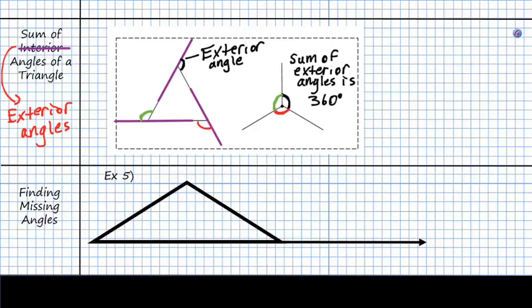So if we're trying to find a missing angle, and we are given an x, 96, and 48, and then a y here, we can actually find both x and y. So for x, we know that the sum of these interior angles has to be 180 degrees. So we can say 96 plus 48 plus x is equal to 180 degrees.